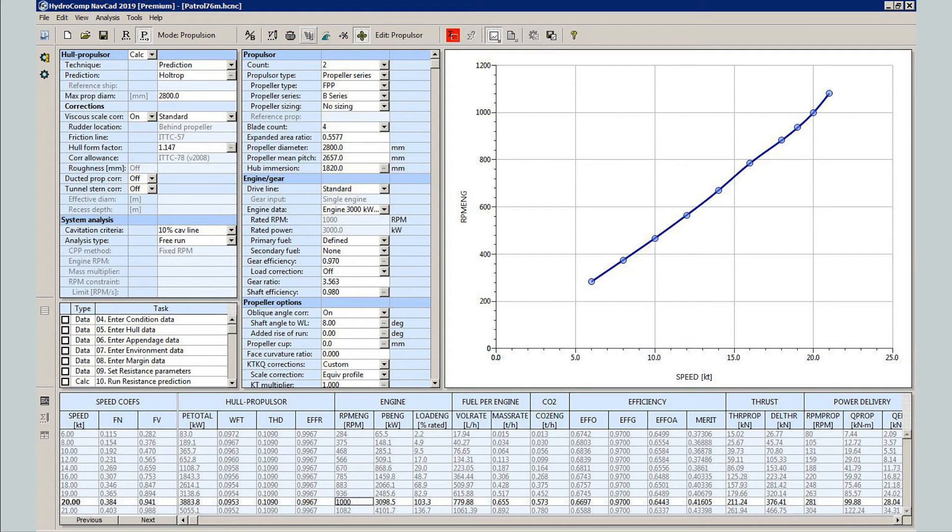NavCat integrates the vessel, propulsor, and drive as a system to run sophisticated calculations that provide estimations of engine RPM, fuel consumption, and system efficiency over a range of speeds.